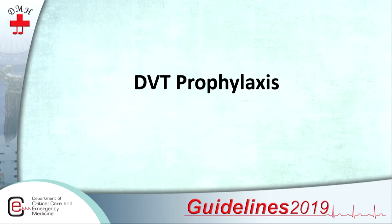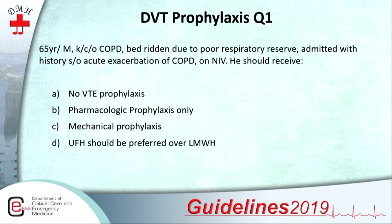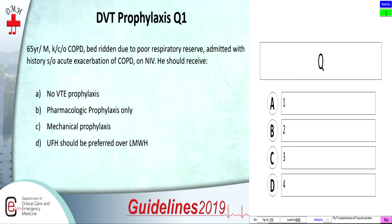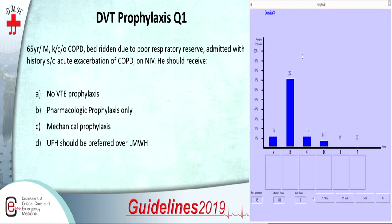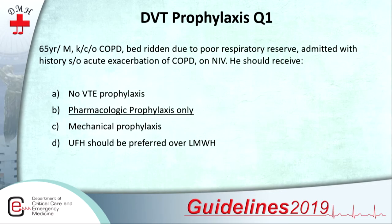Thank you Dr. Bhave — crisp and crystal clear as usual. Let us quickly move on to the MCQs. The first question: the answer is B — pharmacological prophylaxis only. Remember, age more than 40, COPD, bedridden: three reasons for getting a clot in this patient. He has to have thromboprophylaxis. Pharmacological is far better, and UFH will not be used over LMWH, so the answer is B. That's correct. Well done.